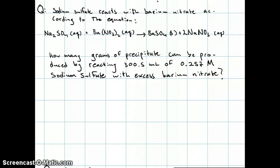So here's a more difficult problem to tackle. The question reads: sodium sulfate reacts with barium nitrate according to the equation Na2SO4 aqueous plus Ba(NO3)2 aqueous yields BaSO4 solid plus 2NaNO3 aqueous.